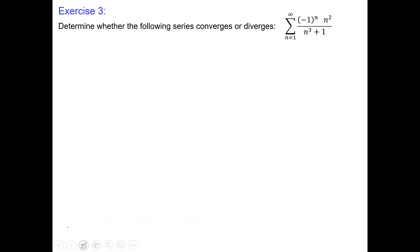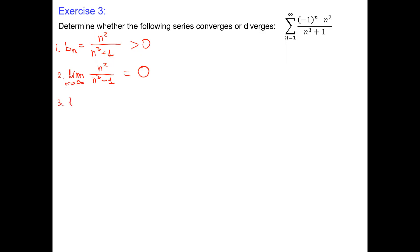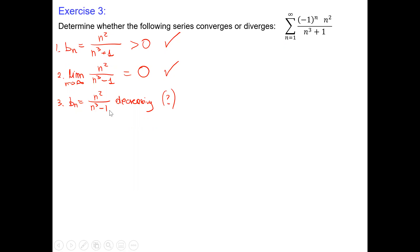Exercise number three: negative one to the n times n squared over n cubed plus one. B sub n is n squared over n cubed plus one — definitely positive because n starts from one. The limit at infinity is n squared versus n cubed; the denominator wins, so it is zero. Check, check. Now is b sub n decreasing? We're making numerator and denominator bigger — one squared, two squared, three squared versus n cubed — it likely is decreasing, but we need to verify.